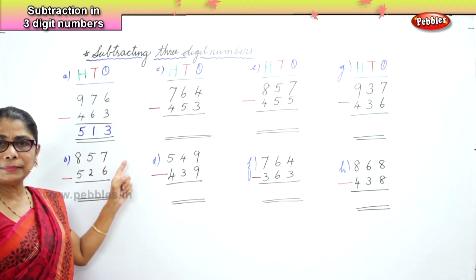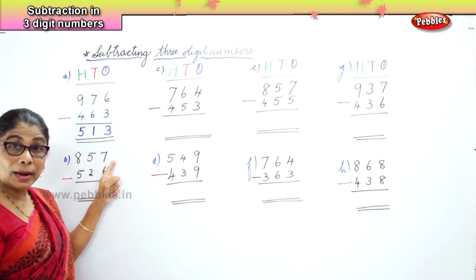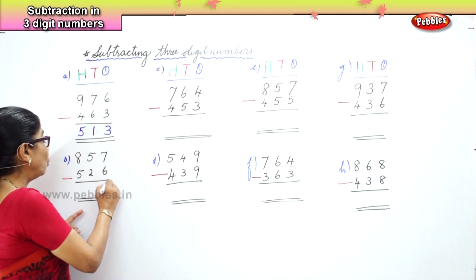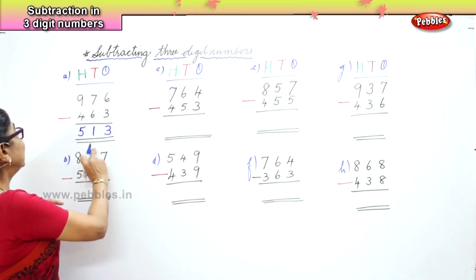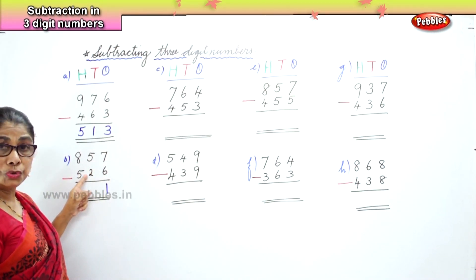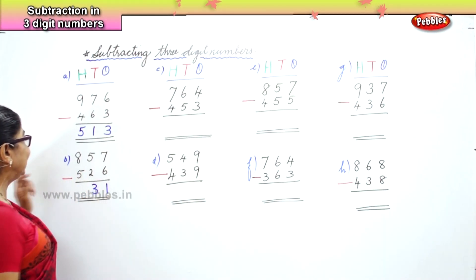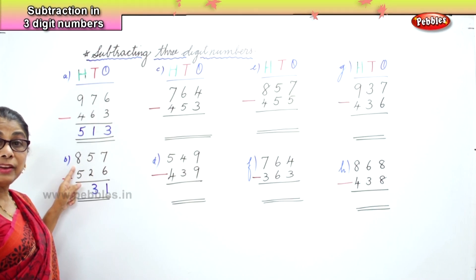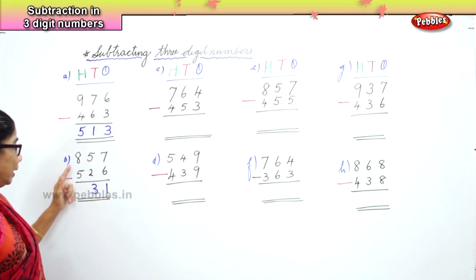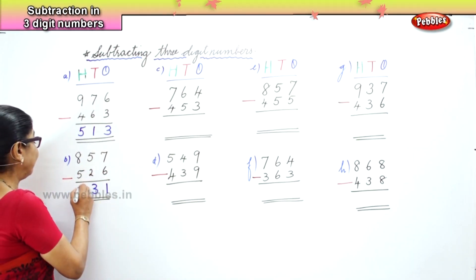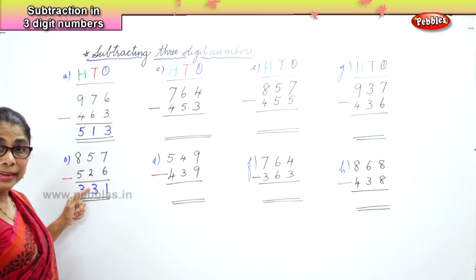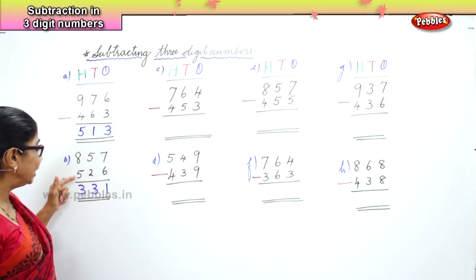Now let's go to the next sum. In the 1s place, we have 7 ones take away 6 ones. 7 minus 6 is 1. Next, we go to the 10s place: 5 tens minus 2 tens. 5 minus 2 is 3. Then, in the 100s place: 800 take away 500. 8 minus 5 is 3. So we have 361.